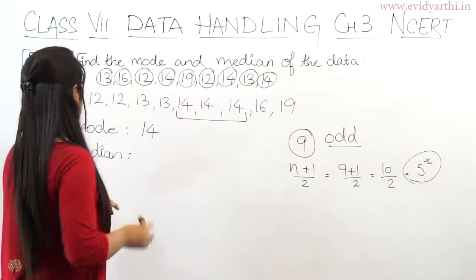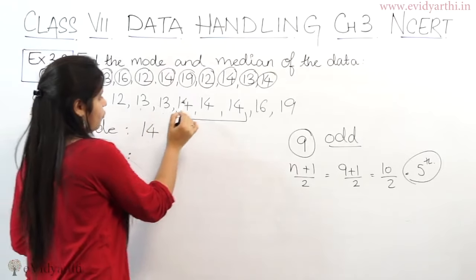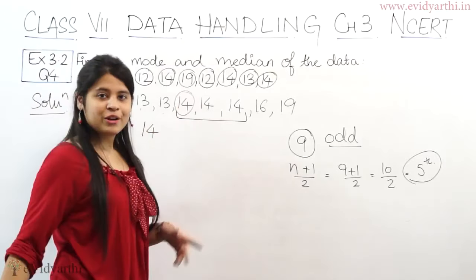What is the number in the fifth place? It will be the median. So one, two, three, four, five. What is the median? 14.